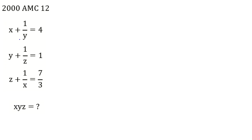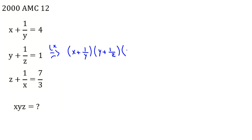Another way: if we multiply all three equations together, we will see that a lot of terms get canceled. If we multiply these three equations, the left-hand side will be (x + 1/y)(y + 1/z)(z + 1/x), equal to 4 times 1 times 7/3. The right-hand side is 28 over 3.